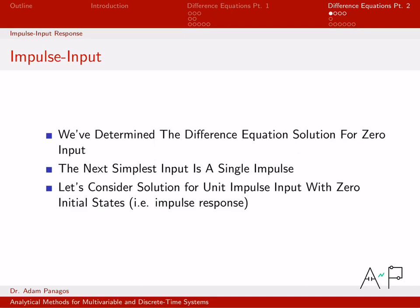This is also a relatively easy case, where we solve the difference equation for an input that is zero for almost all time except for a single input of one at time zero. However, it results in a very important definition. We're going to define the impulse response of the system as the output of the system at rest when a single unit impulse is applied at time zero. This is a very important quantity we'll use for quite a bit of the class.